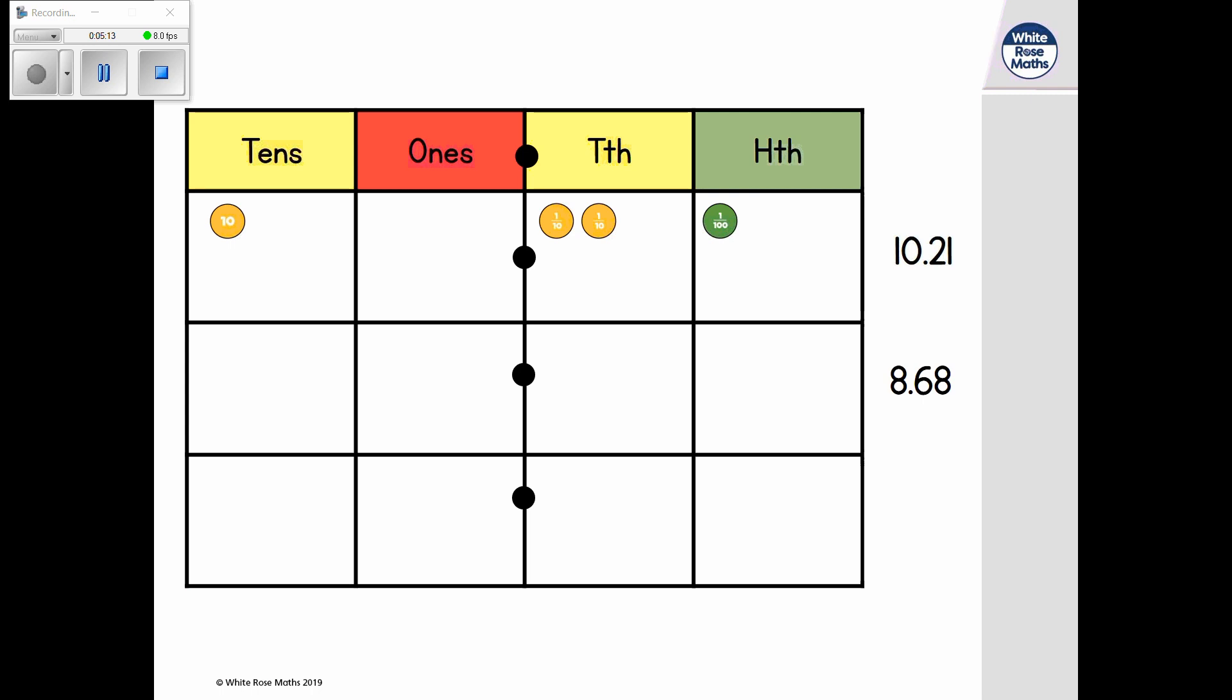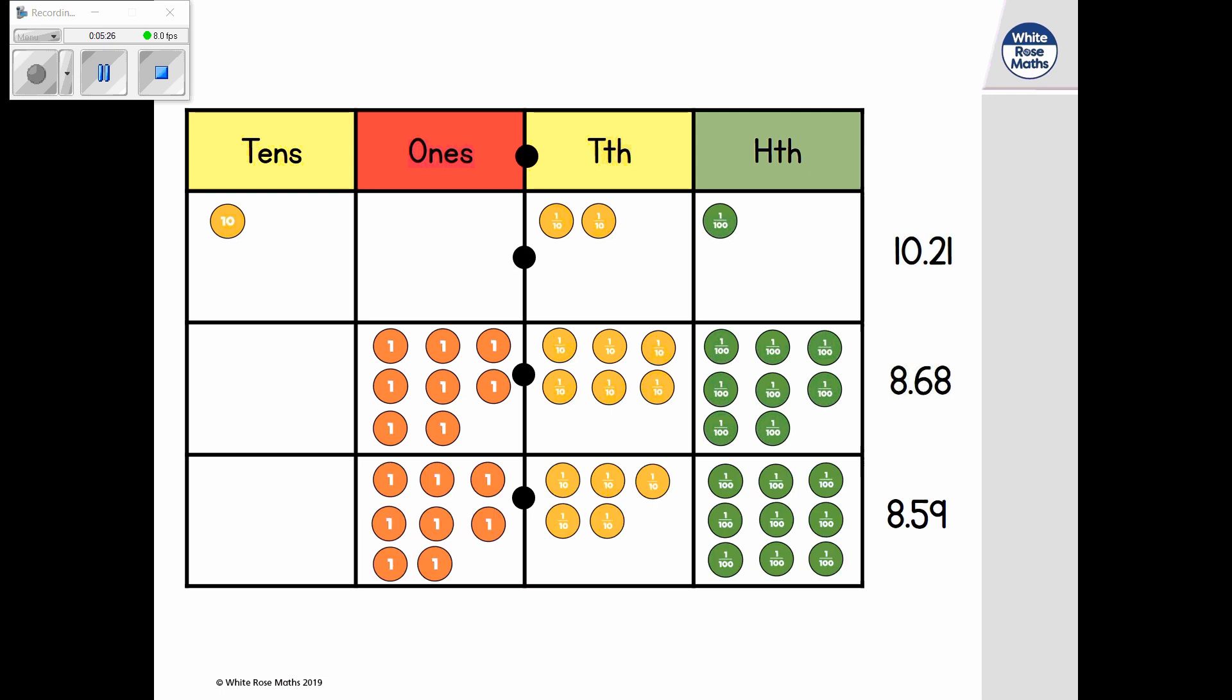With the number 8.68, there looks to be many more counters, but the number has a lower value because there are no tens. 8.59 has the same amount of ones and more hundredths, but it has fewer tenths, so it has a smaller value.